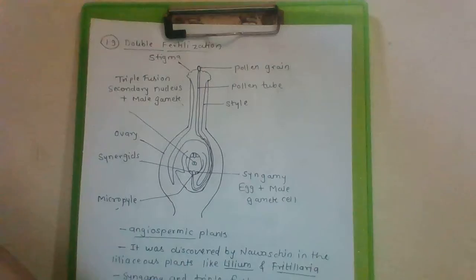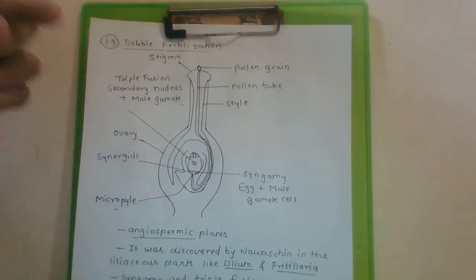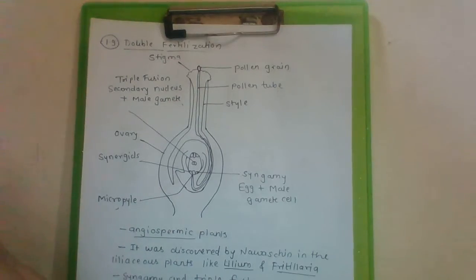As non-motile male gametes are carried through hollow pollen tube, it is known as siphonogamy. While siphonogamy, as non-motile male gametes are carried through hollow pollen tube, it is known as siphonogamy that ensures fertilization to take place.